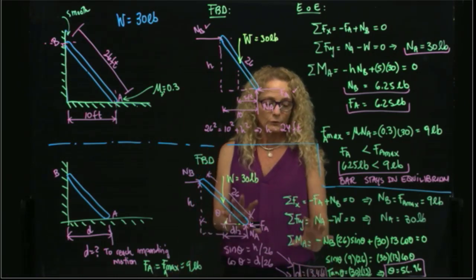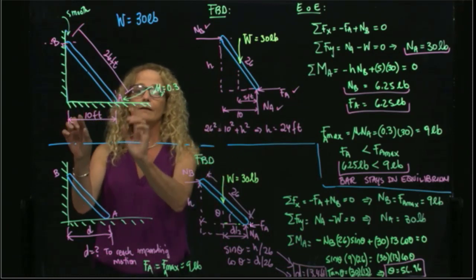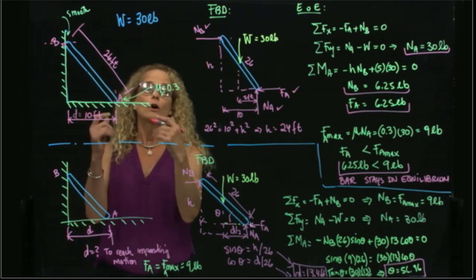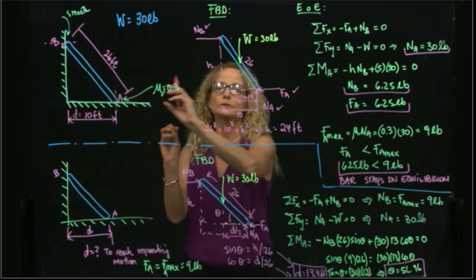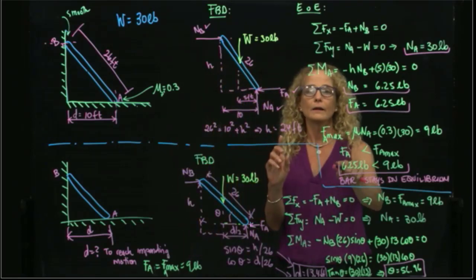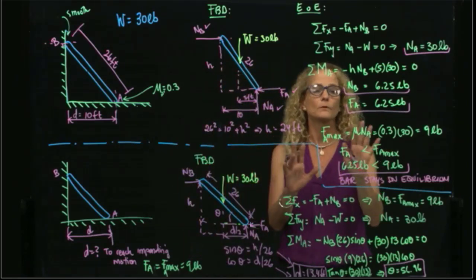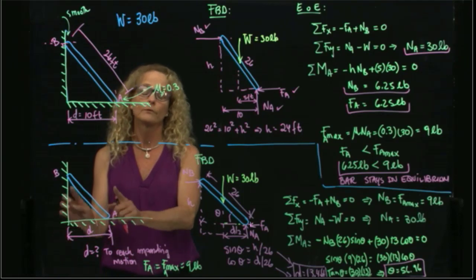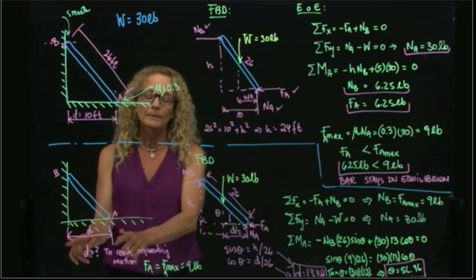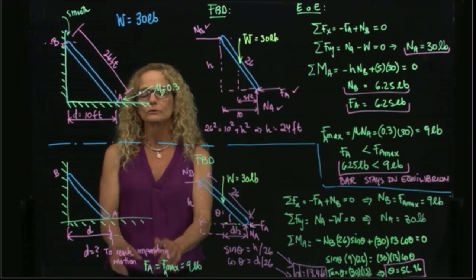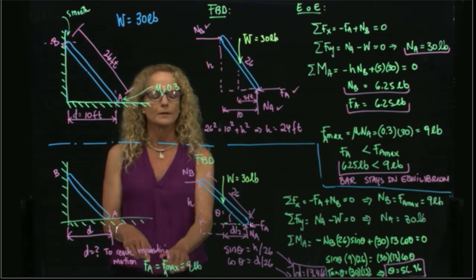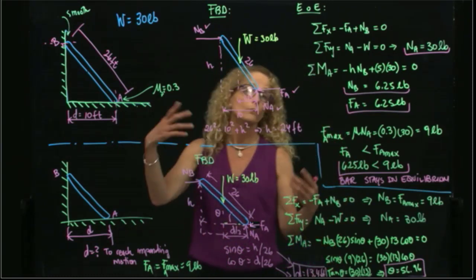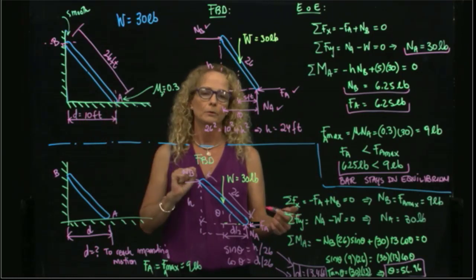Comparing the two problems: in the first case, the distance D was given and we asked if the system could move — we found the friction force was less than the maximum, so the bar stays in equilibrium. In the second problem, we asked for the maximum distance D to reach impending motion — we forced the friction force to be the maximum and found D equals 13.4 feet, which is bigger than the distance from the previous example.